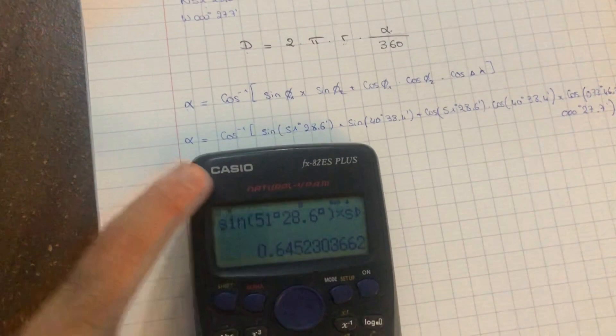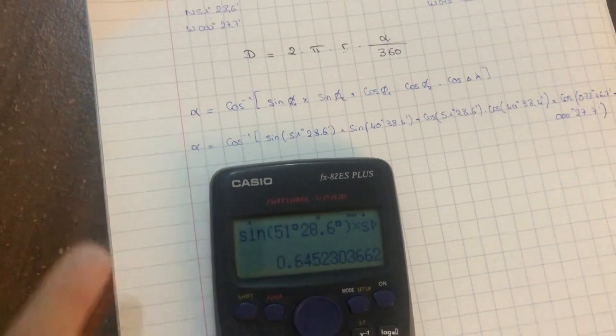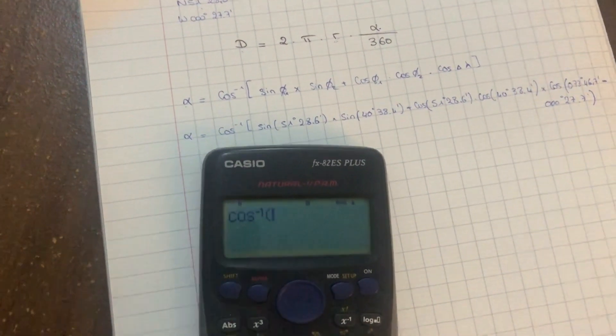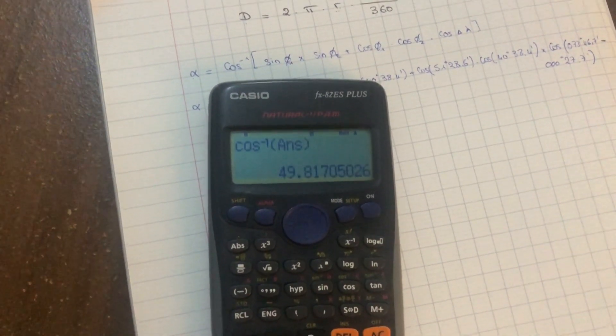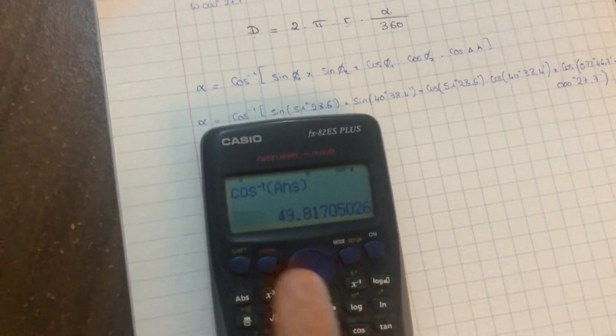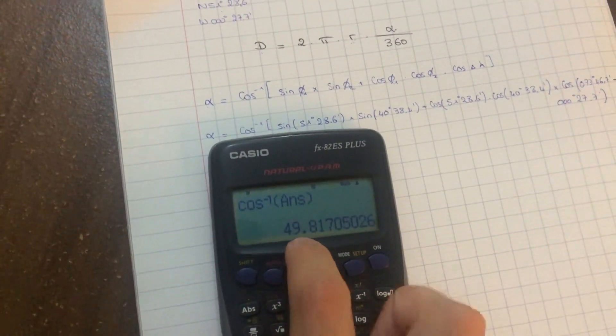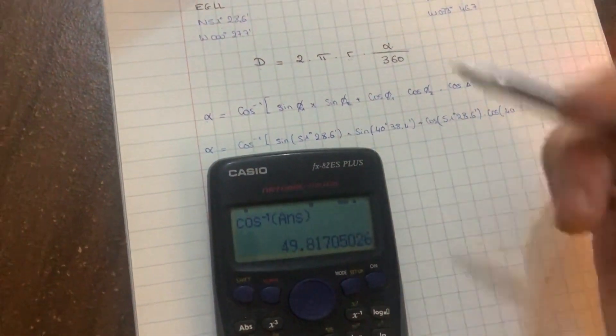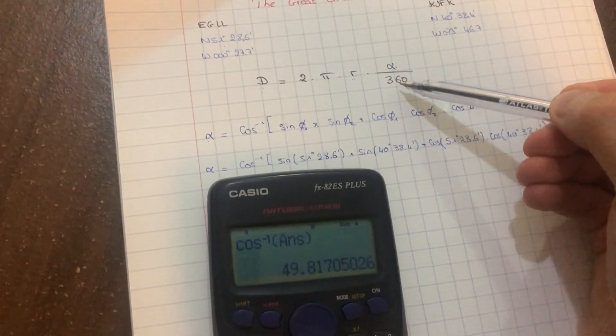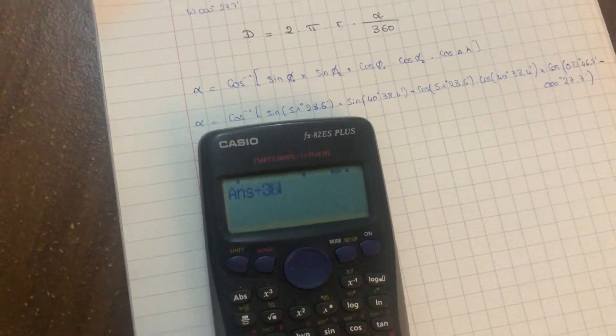we get this, but don't forget the cosine. So shift cosine the answer, and we get this. This 49.8 is this angle here. So this angle divided by